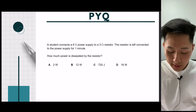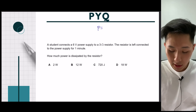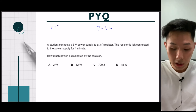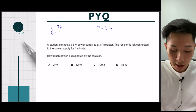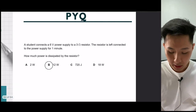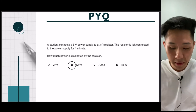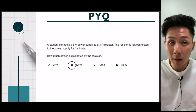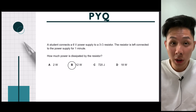Last question: a student connects a 6-volt power supply to a 3-ohm resistor. How much power is dissipated? Using V = IR to find current: I = 6 ÷ 3 = 2 amperes. Then P = VI: P = 6 × 2 = 12 watts. Answer is B. So that's the last question for this topic. In this chapter, we've talked about different electrical quantities: current, resistance, voltage, and electrical power rating. Let me know if you have any questions in the comment section. Thank you so much for watching — I'll see you in the next video.